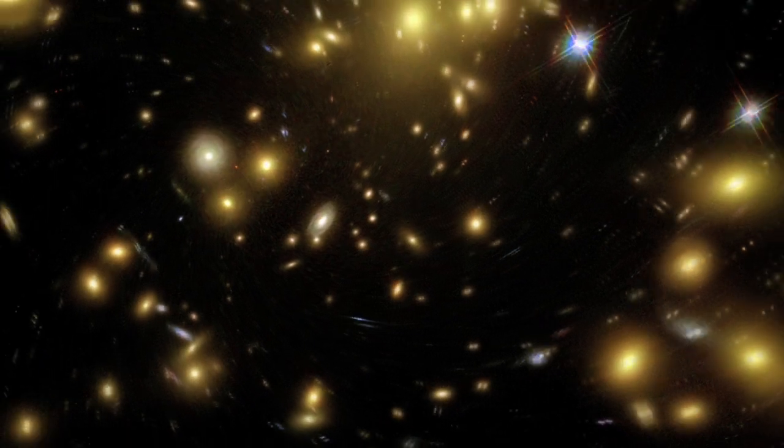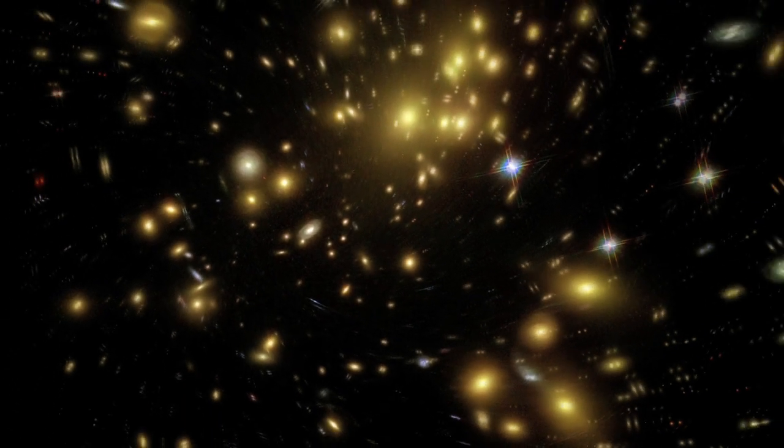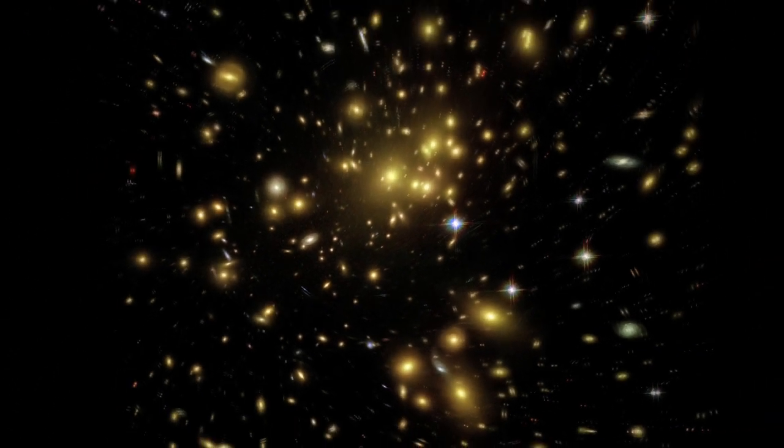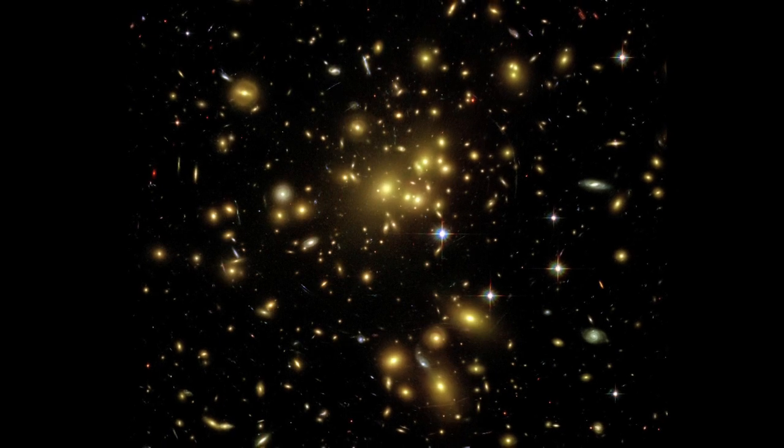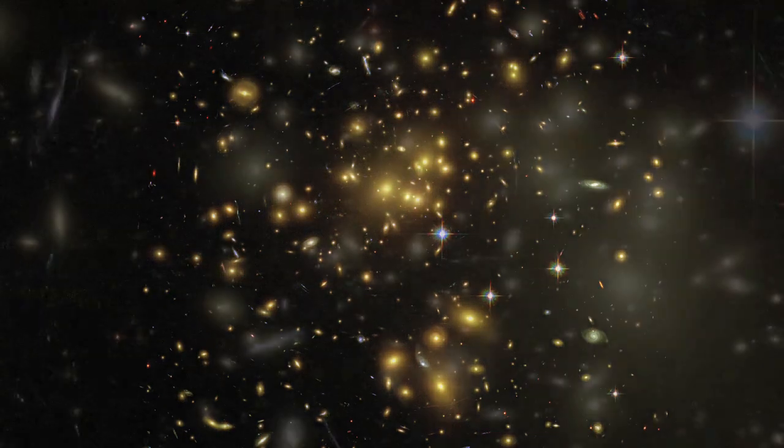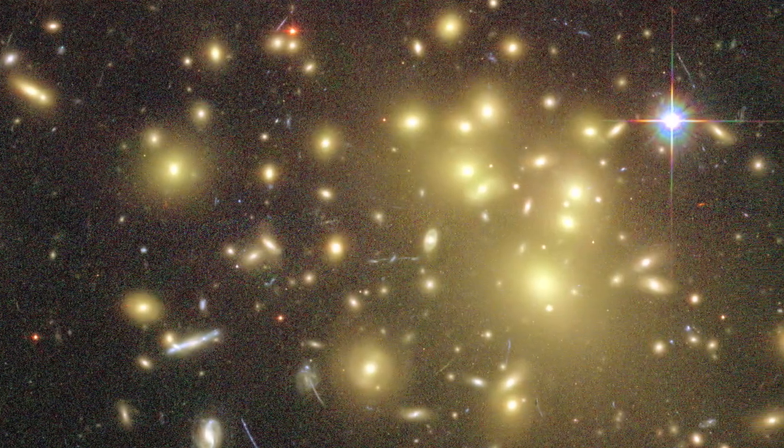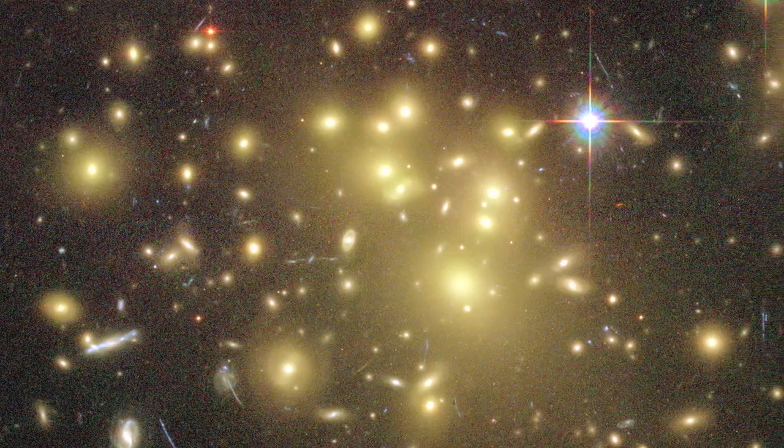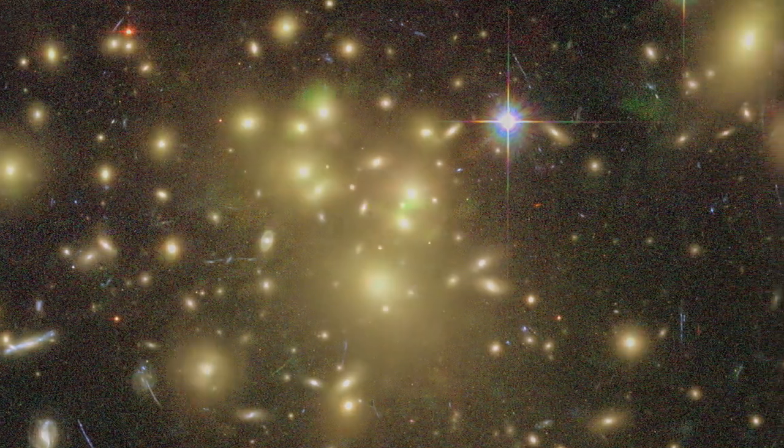This is Abel 1689, one of the largest galaxy clusters known. This view spans some two million light-years, or about the distance between our Milky Way galaxy and the nearest big spiral. Into this space, Abel 1689 packs more than 500 galaxies. As astronomers mapped nearby galaxy clusters,